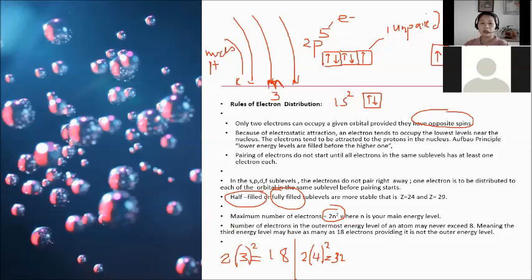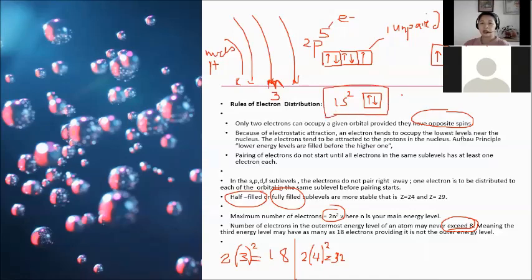The number of electrons in the outermost energy level of an atom may never exceed 8. For an atom to be stable, the outer shell must contain 8 electrons — except helium, which is stable with 2 electrons. This is the octet rule. The third energy level may hold up to 18 electrons, but only if it is not the outermost level.